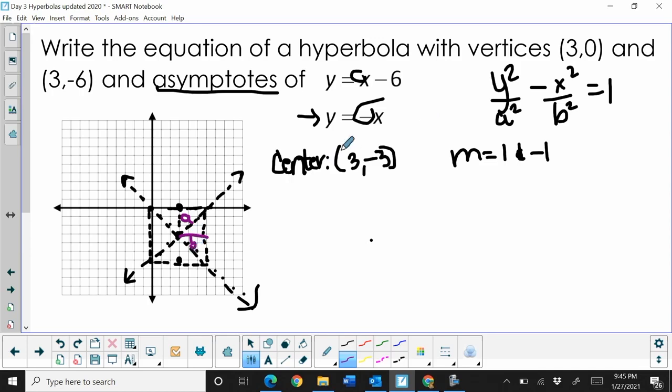We haven't had one like that where a and b are the same, and that's okay. So a is three, b is three, and that's all I need to finish out my equation since I have the center. So let's write our formula with the y² first.